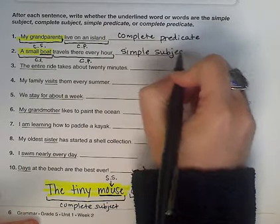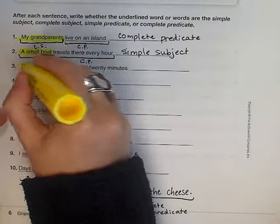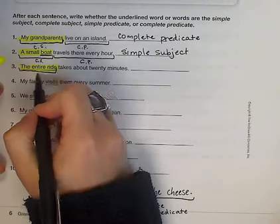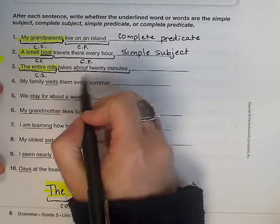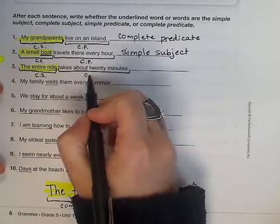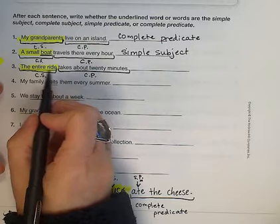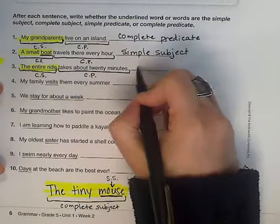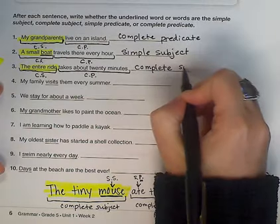Let's try one more: The entire ride takes about 20 minutes. The sentence is about the entire ride. That's my complete subject. My complete predicate is takes about 20 minutes. Now I'm going to check that underline — all the words in that complete subject are underlined. So the entire ride is the complete subject.